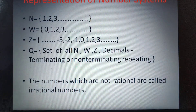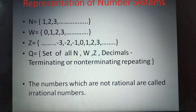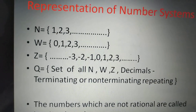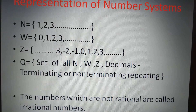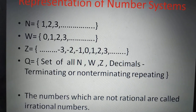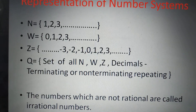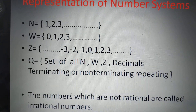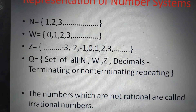Now let us understand how to represent these number systems. The set of natural numbers is represented by the letter N. The set of whole numbers is represented by W. The set of integers is represented by Z, also by the letter I. Q is the set of rational numbers. The decimal number consists of natural numbers, whole numbers, integers, and decimals.